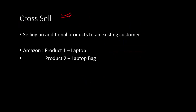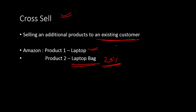Cross selling is another type of retail modeling that is heavily used in marketing products and services. It's basically selling an additional product to an existing customer, and the product doesn't need to be the same. For example, on Amazon, if you've just bought a laptop, Amazon will recommend or offer you a laptop bag — because a laptop bag is related to a laptop. Amazon believes you'll also need it, so it gives you a 20% discount on the laptop bag. The product should be related, and they should be bought around the same time.